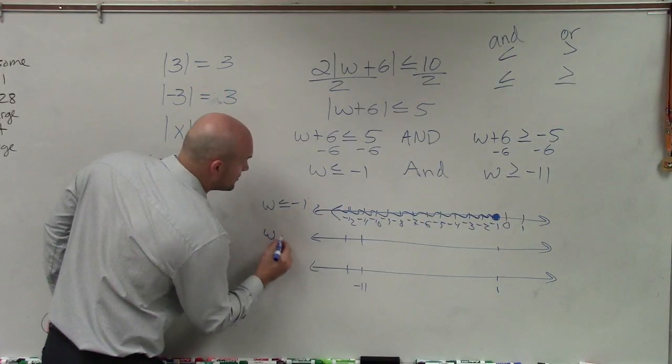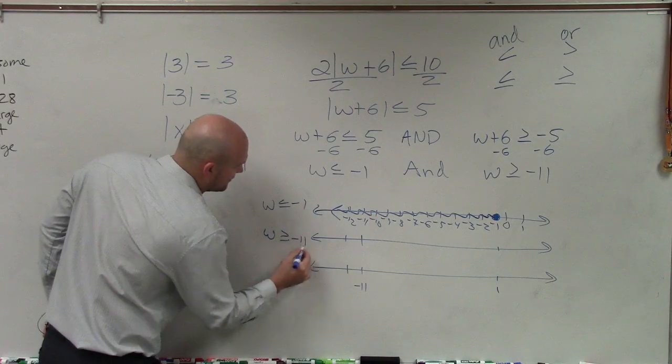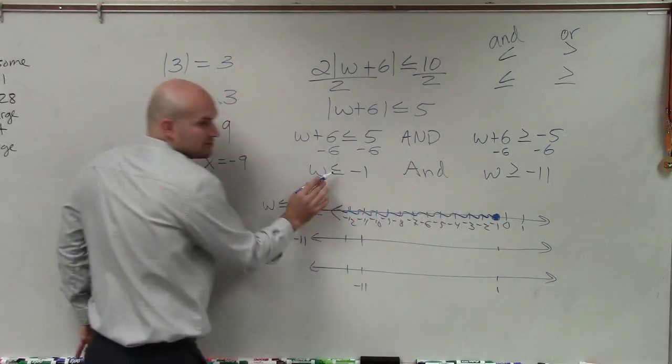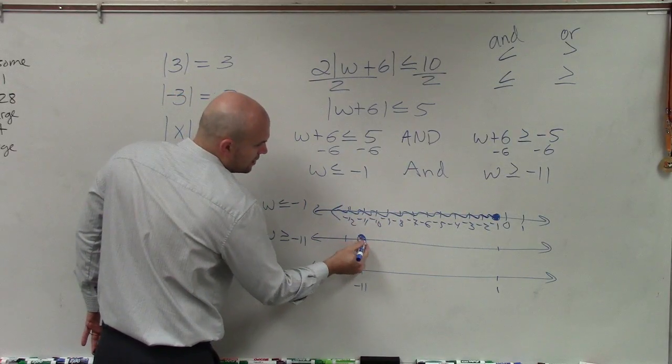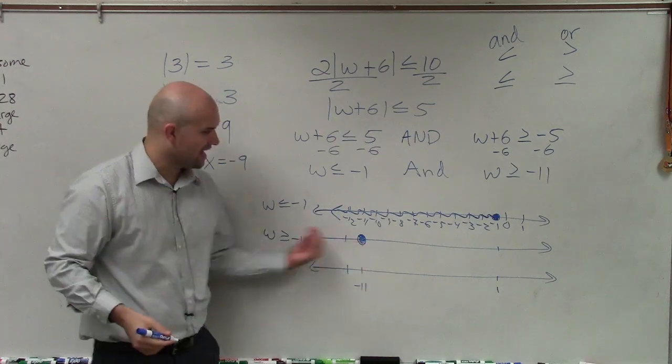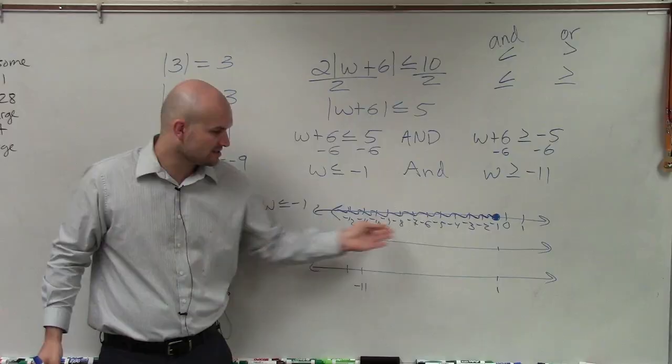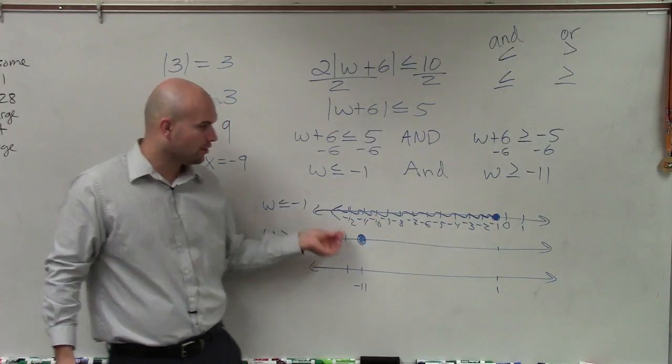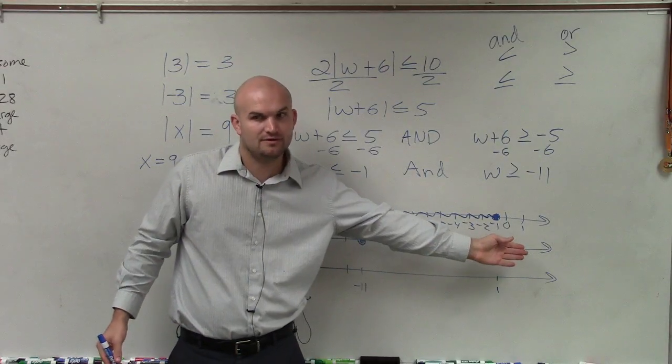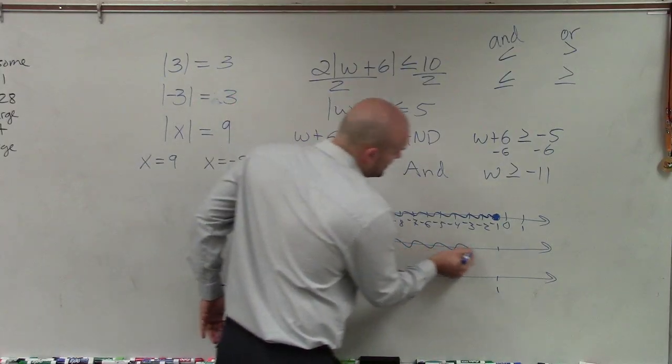Now, let's do w is greater than or equal to negative 11. Well, greater than or equal to and less than or equal to is still going to produce a closed point. Now, are points to the left, I'm kind of using the same intervals, are points to the left greater than or points to the right greater than negative 11? To the right. So let me graph over here.